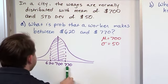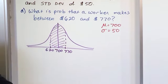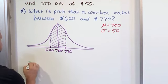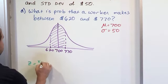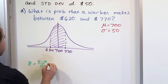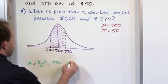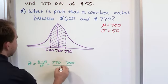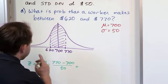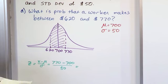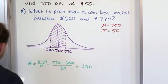So we know we're going to need to convert this value to a z-score and this value to a z-score. So z is equal to x minus the mean over the standard deviation. So 770 minus 700 over the standard deviation, which was 50 for this particular normal distribution. And when you get that, you get 1.40 for that z-score.